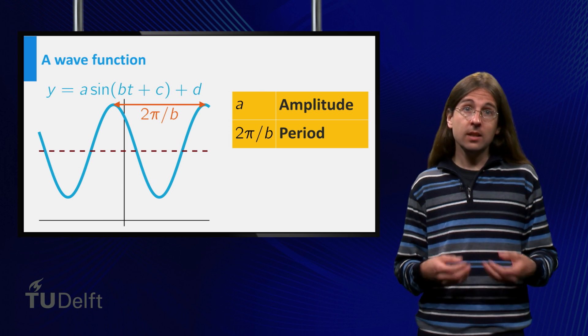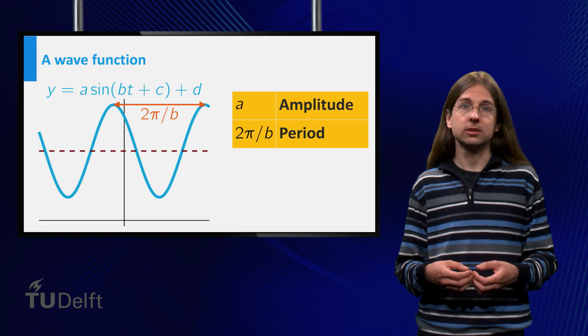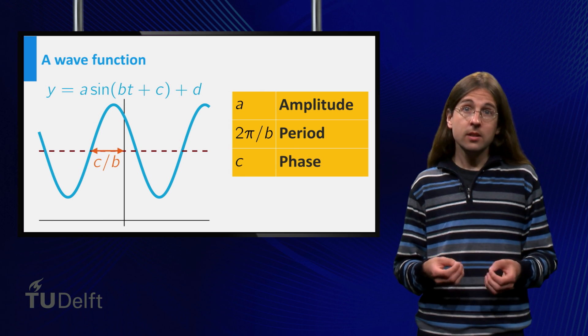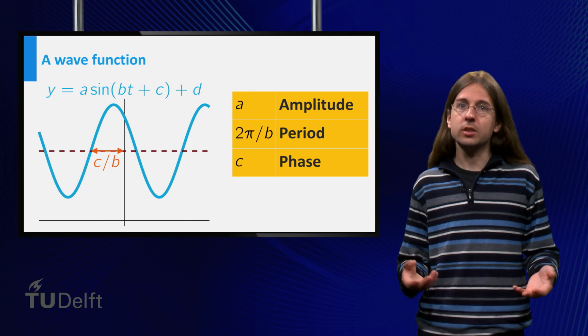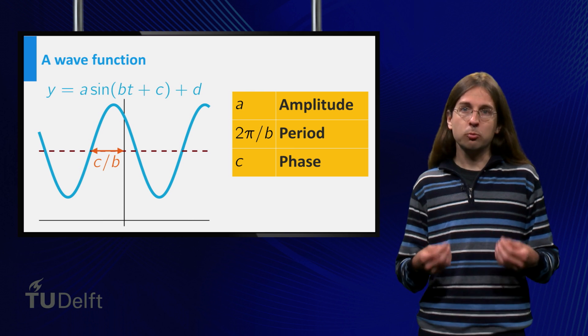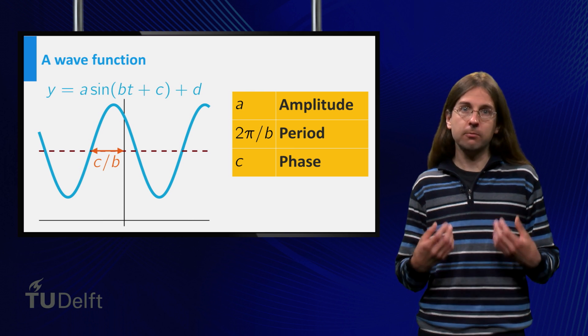The values of c and d correspond to translations. c is called the phase of the wave. The phase of a wave does not change what the wave looks like, but tells us at which time it passes through equilibrium.